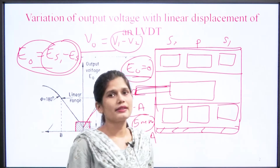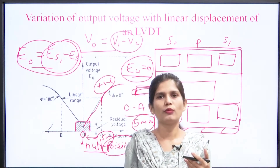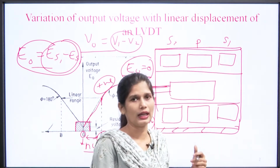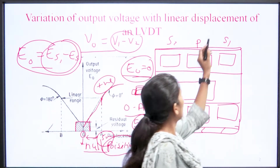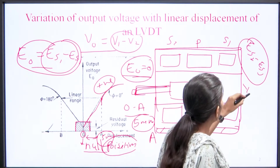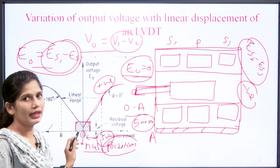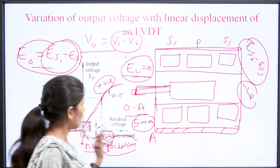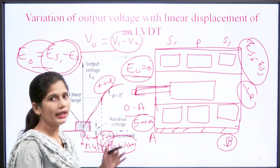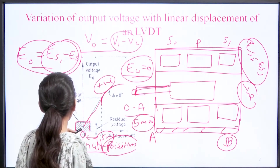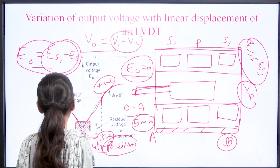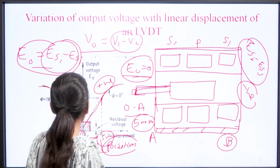The third case: when the core moves in the right-hand direction, the output voltage will be ES2 minus ES1, which gives a negative voltage. In the graph, up to point 'b', the voltage linearly increases in the negative direction, and after 5 mm it starts to decrease. This is the linear range in which the LVDT works.